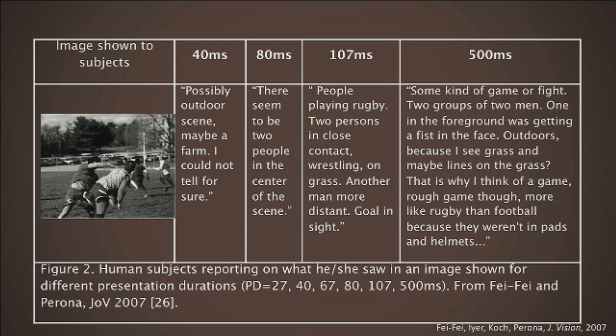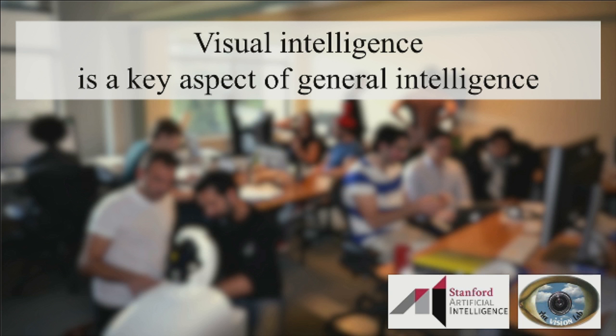In fact, our brain spends about half of its neuronal processing in visual processing. It's the most important sensory, perceptual, and cognitive system in our brain. So what do we want to do on the computer side? We are tackling one of the key aspects of intelligence, which is visual intelligence. What we really want to do is build machines, build computers that can act with the kind of visual intelligence that humans are capable of.